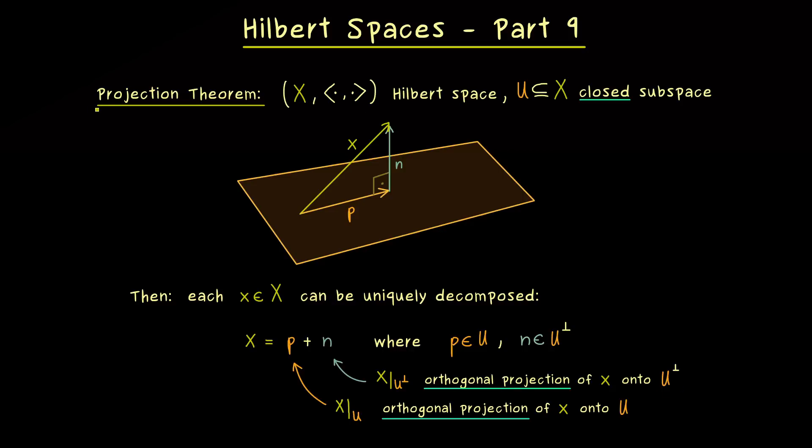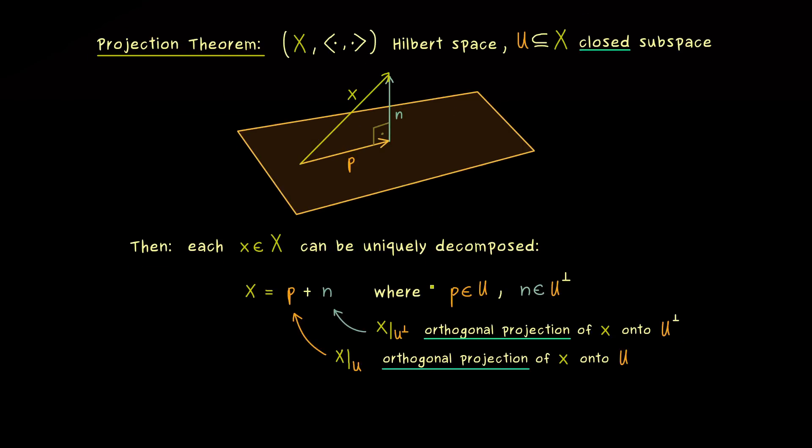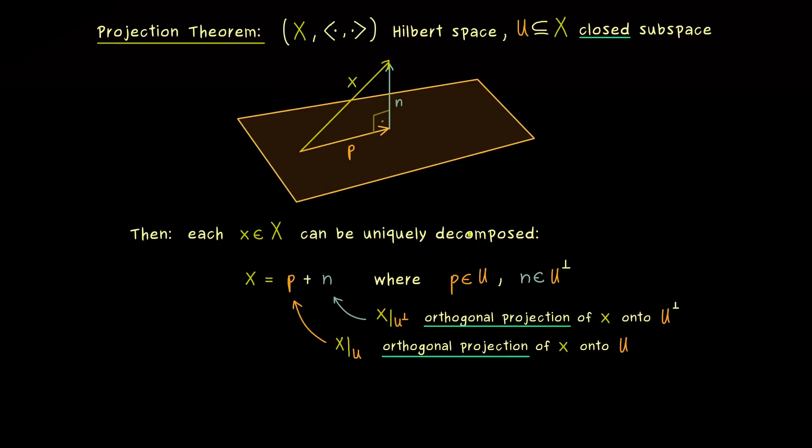So this is the whole famous projection theorem and you might already know it from linear algebra. Hence the generalization we have here is that the claim also holds for infinite dimensional vector spaces if there are Hilbert spaces. And you might already guess that the crucial part for the proof will be the approximation formula we have for Hilbert spaces.